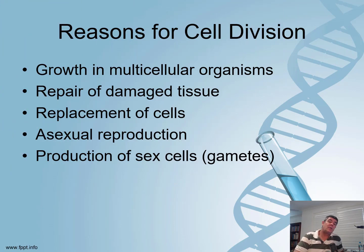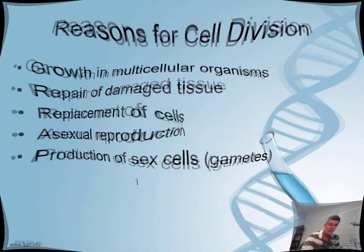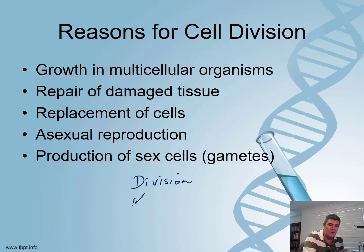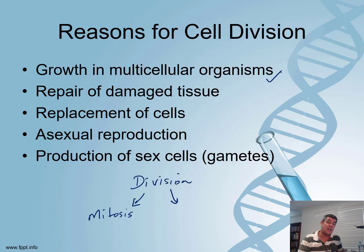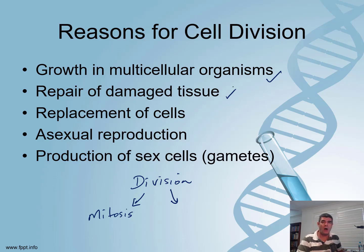There are a number of different reasons why cells divide, and they divide in one of two ways. Cell division is primarily about mitosis — growth in multicellular organisms, where in order to increase the number of cells they need to go through this process of mitotic division. Repair of damaged cells and tissues is a second reason why cells may divide, and also replacement of cells. This can include old worn-out cells; our blood cells, for example, continue to be replaced on a regular basis. So these are all reasons why cells might divide mitotically.